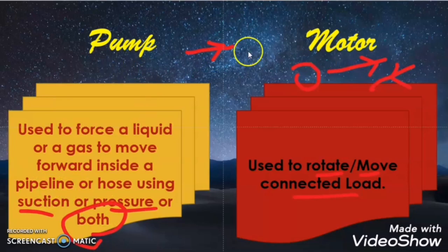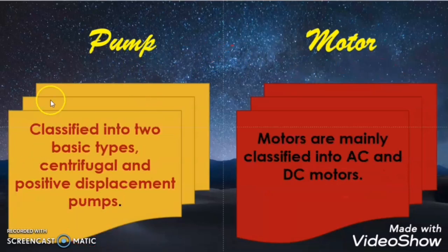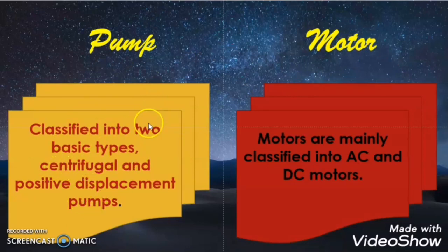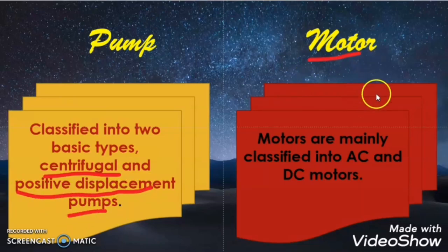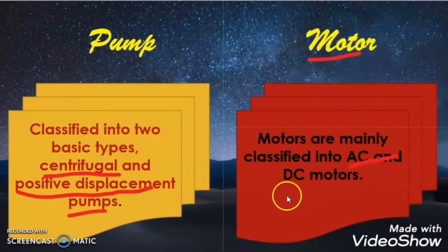Hope you understood the difference between these two. Now another difference between pump and motor is that a pump is classified into two major types: one is centrifugal type and another one is positive displacement type. A motor is also classified into two major sections: one is AC motor and the second one is DC motor.